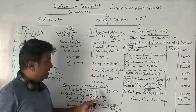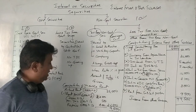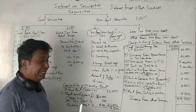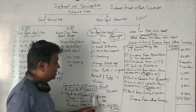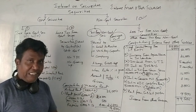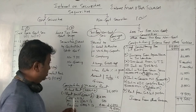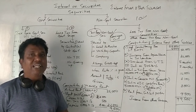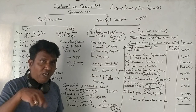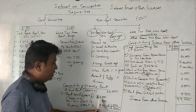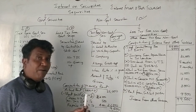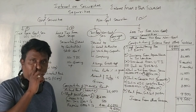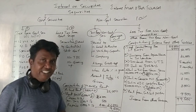The rent received from subletting is ₹3,000 per month, totaling ₹36,000 per year. The rent paid for the sublet portion (one-third of ₹6,000 × 12) is ₹24,000. Municipal taxes attributable to the sublet portion (one-third of ₹9,000) is ₹1,500. Repairs attributable to the sublet portion (one-third of ₹6,000) is ₹2,000. Total charges: ₹26,500.